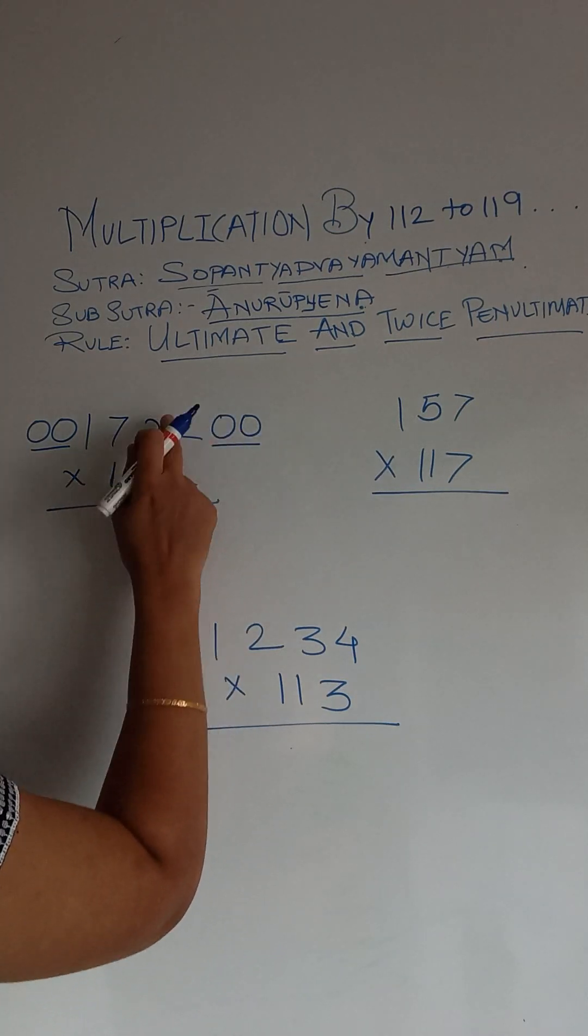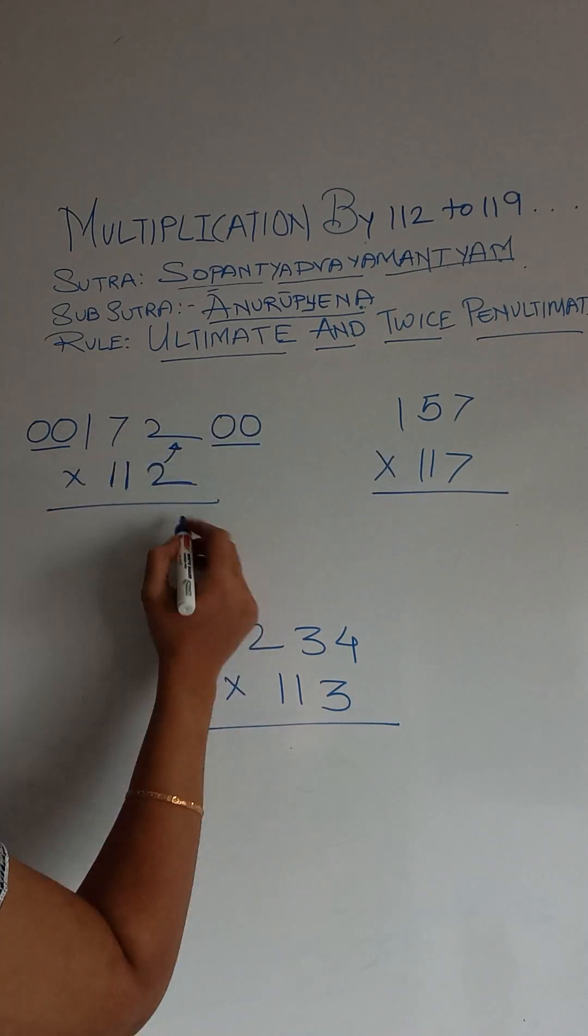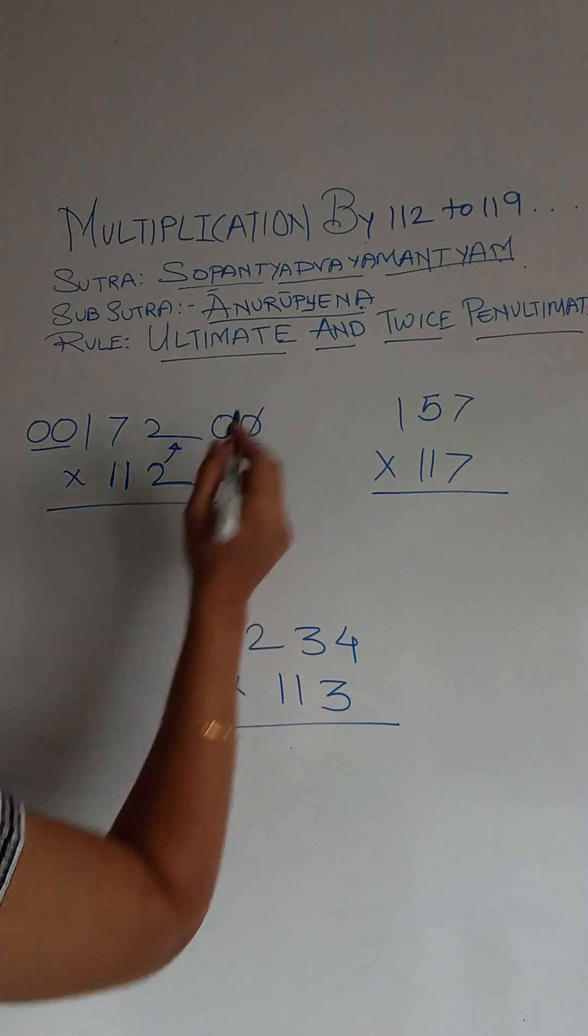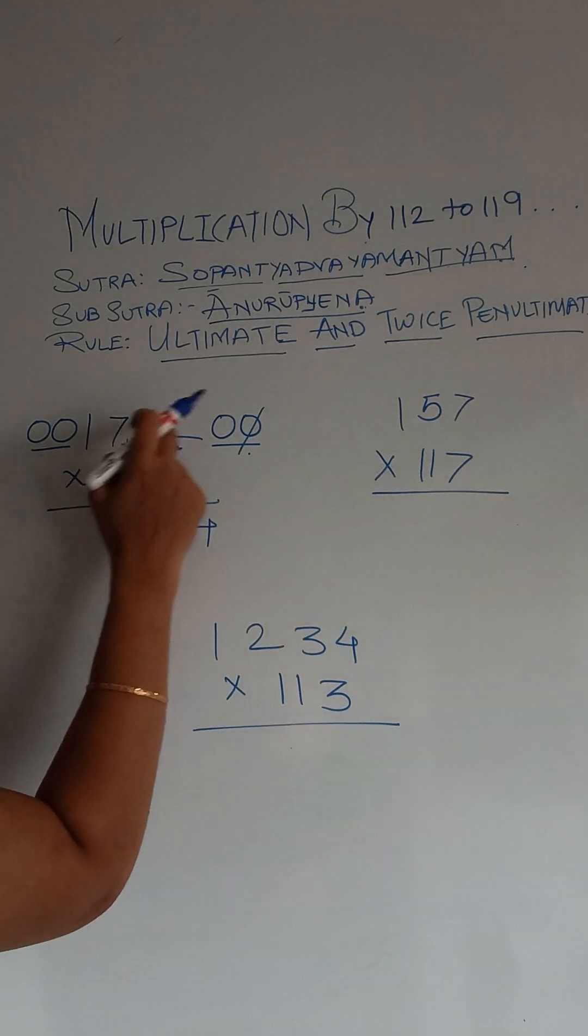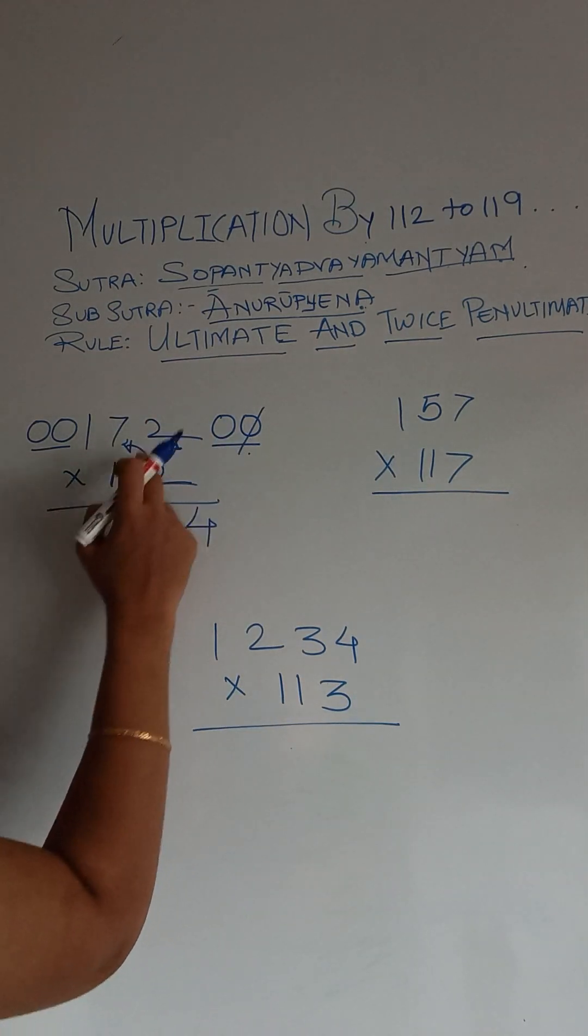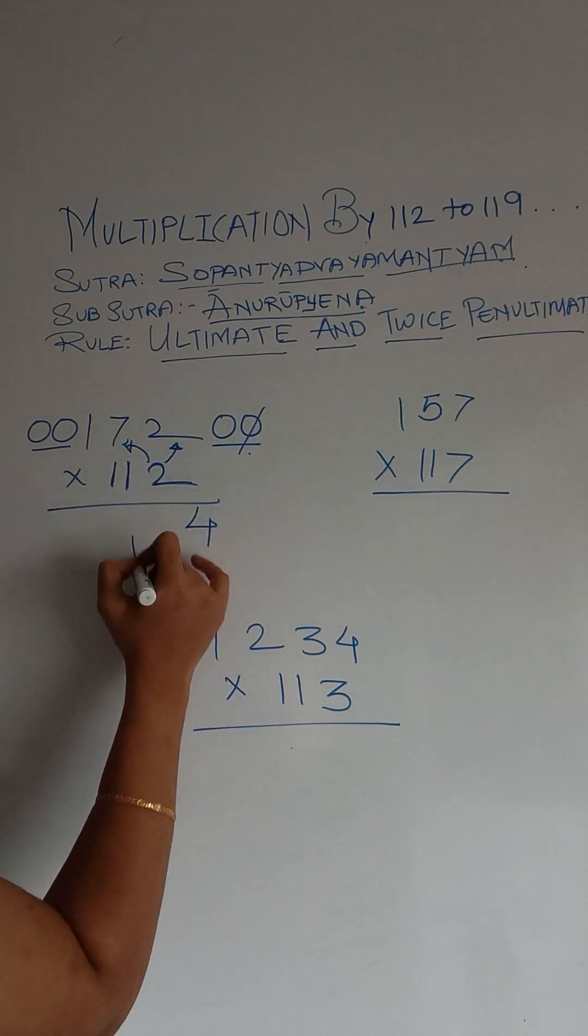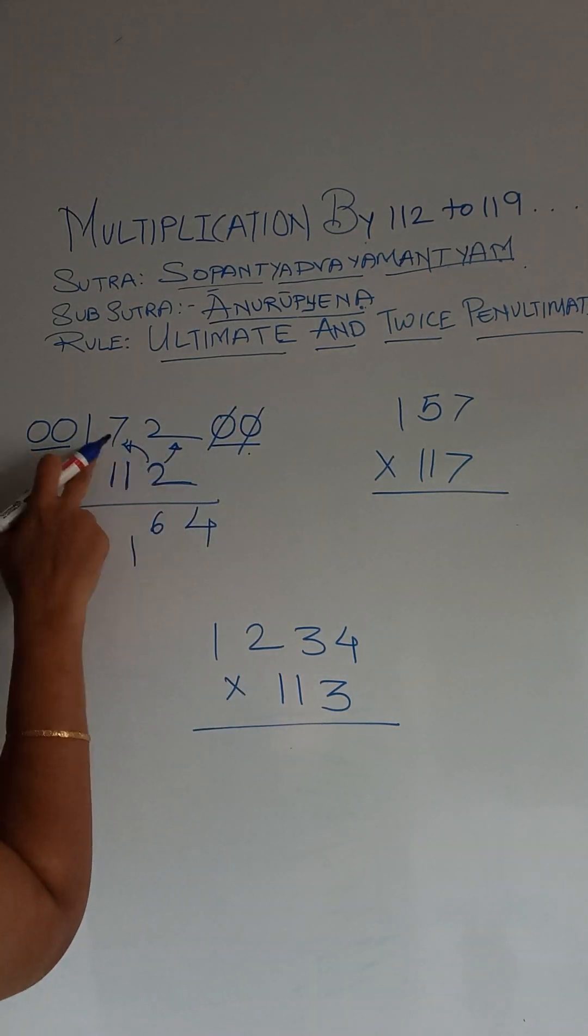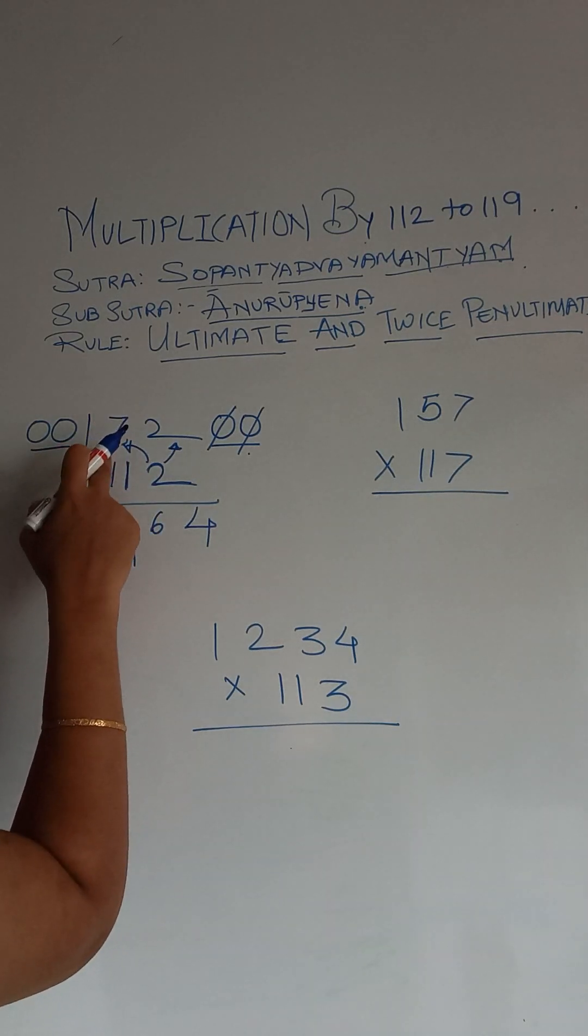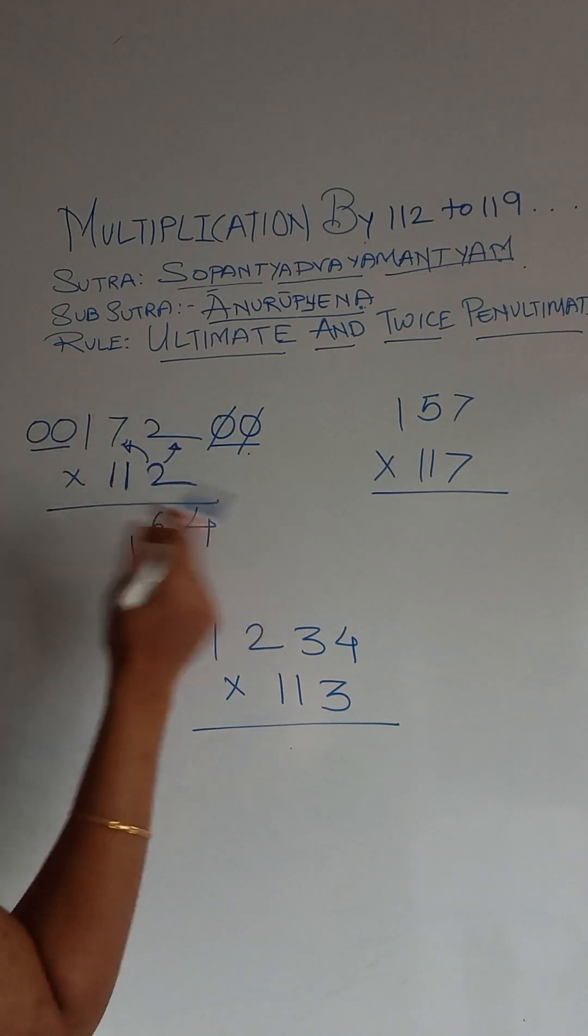So 2 into 2 that is 4, 4 plus 0 plus 0 that is 4. 2 into 7 that is 14. 14 plus 2 is 16, plus 0 is 16. 2 plus 1, 2 into 1 is 2. 2 plus 7 is 9. 9 plus 2 is 11.